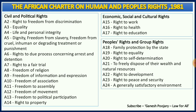The important economic, social and cultural rights are: right to work, right to health, and right to education. The important people's rights and group rights are: family protection by the state, right to equality, right to self-determination, right to freely dispose of their wealth and natural resources, right to development, right to peace and security, and right to a generally satisfactory environment. Articles 2 to 14 cover civil and political rights, Articles 15, 16, 17 cover economic, social and cultural rights, and Articles 18 to 24 cover people's rights and group rights.